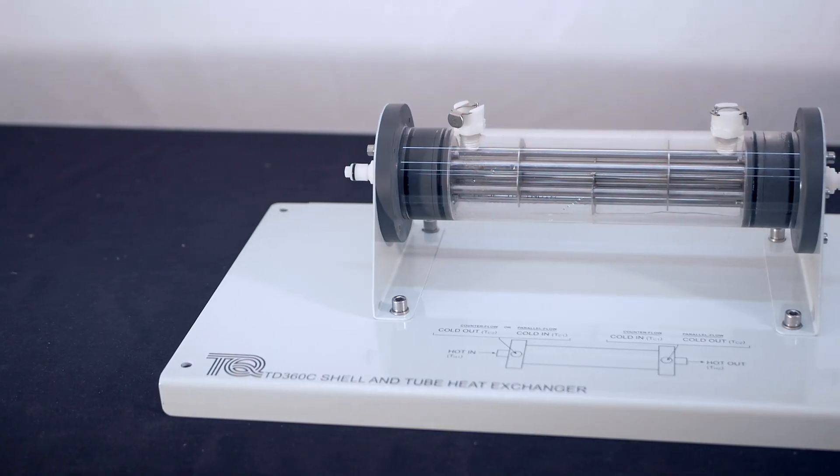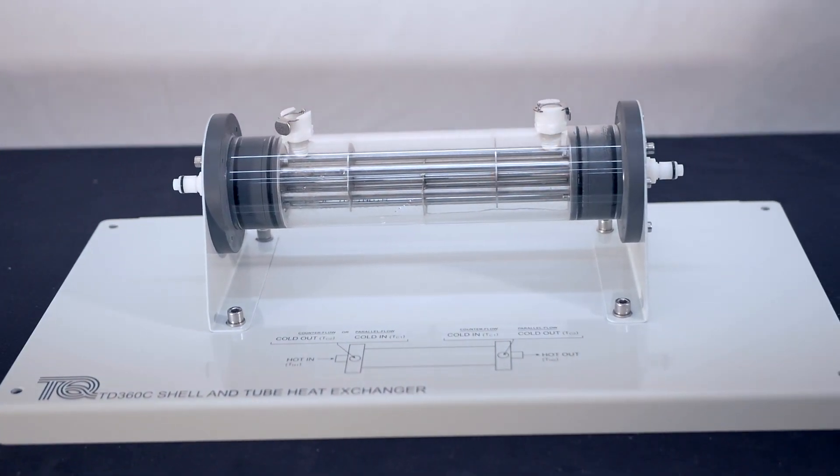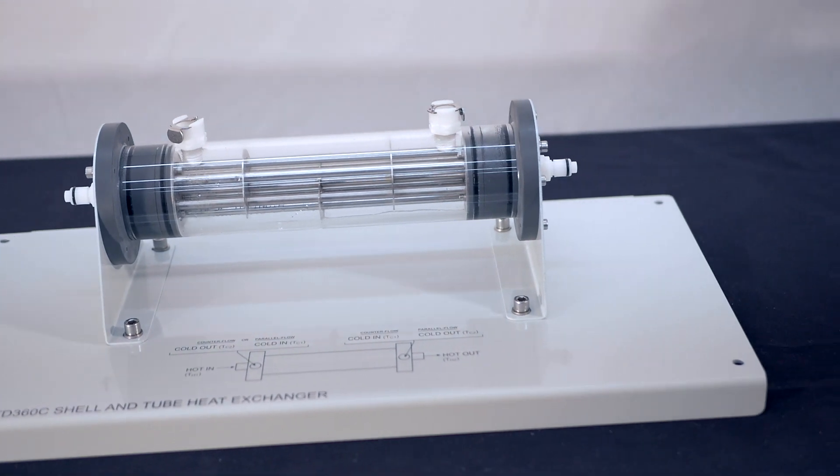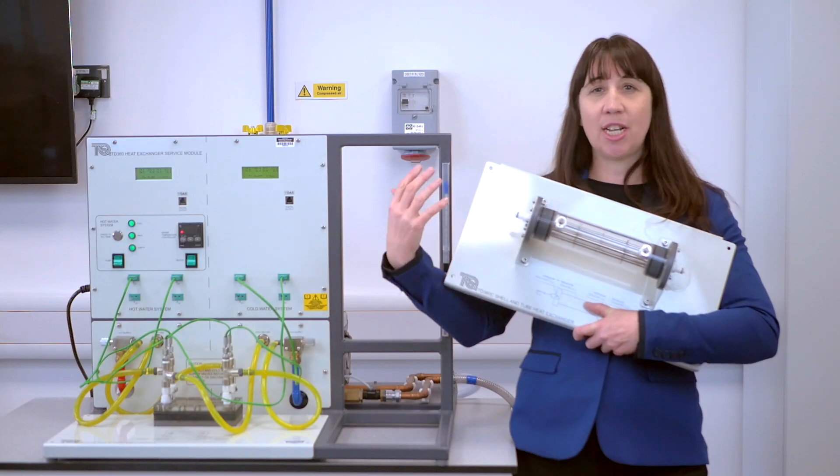The shell and tube heat exchanger, the TD360C, is the most common heat exchanger used in many industries. As you can see, there's a large tube. This is the shell.